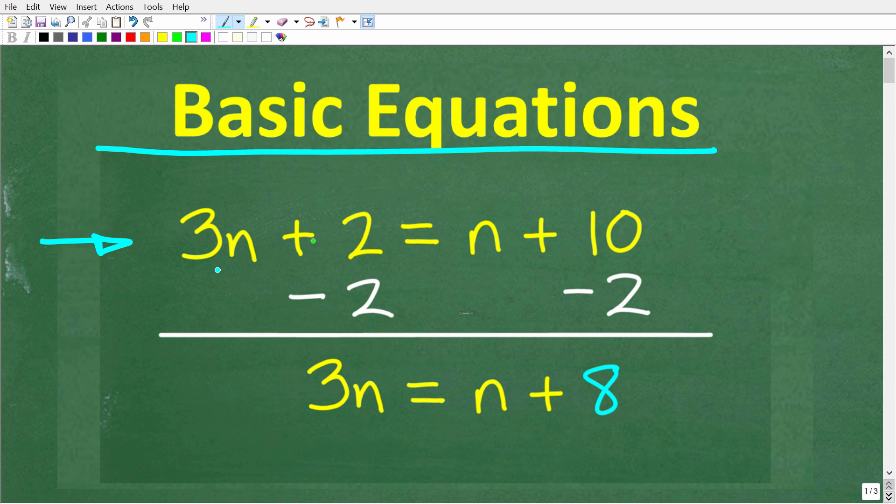All right, so here is our problem. We have 3n plus 2 is equal to n plus 10. Now you can see here, I already started the solution. So we're down to these steps right here. We have 3n is equal to n plus 8. So if you can finish this out and tell me what n is equal to, well, that will be fantastic.